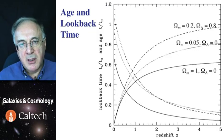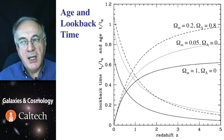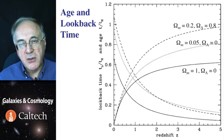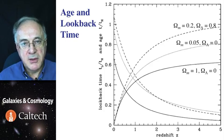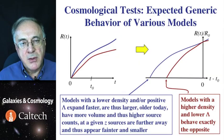So, here is the look-back time as a function of redshift, or alternatively, age of the universe as a function of redshift, measured in units of the Hubble time for a variety of different models. They all behave qualitatively in similar fashion, but the curves are separated.